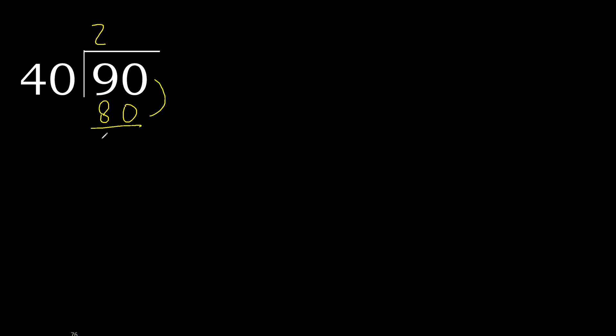Subtract: 90 minus 80 is 10. That is not a whole number, therefore complete with 0. Always complete with 0. Here with a decimal point — 0 point.